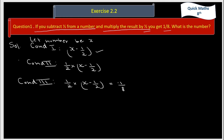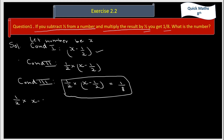What is the number? We will solve this and find out x, and x is the required number. The equation is: 1 by 2 multiply (x minus 1 by 2) equals 1 by 8. Since the entire equation is in fractions, we will multiply both sides by 8 to convert it to integers.